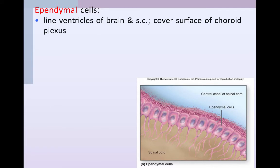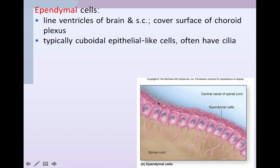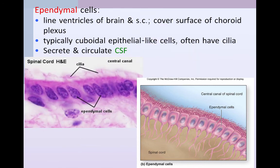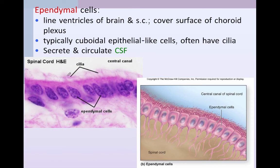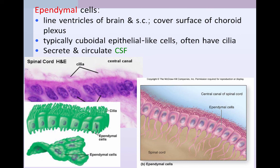Not everybody includes ependymal cells in the glial cells, but some do. Ependymal cells are found in the choroid plexus and they line the ventricles of the brain and the spinal cord. Many of them have cilia on their surface, and it's the ependymal cells which produce and circulate cerebrospinal fluid — the cilia beat and move the fluid. Here you can see a picture of some of those ependymal cells with very fine hair-like cilia, and a diagram showing them as epithelial-like, simple cuboidal cells.